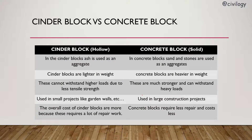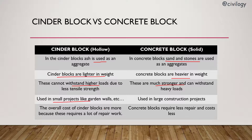Now for the differences between cinder block and concrete block: in cinder blocks, ash is used as an aggregate; in concrete blocks, sand and stones are used. Cinder blocks are light in weight; concrete blocks are heavier as they are solid. Cinder blocks cannot withstand higher loads due to less tensile strength, whereas concrete blocks are much stronger and can withstand heavy loads. Cinder blocks are used in smaller projects like garden walls, while concrete blocks are largely used in major projects. The overall cost of cinder blocks is more because they require a lot of repair work, whereas concrete blocks require less repair and cost less overall.